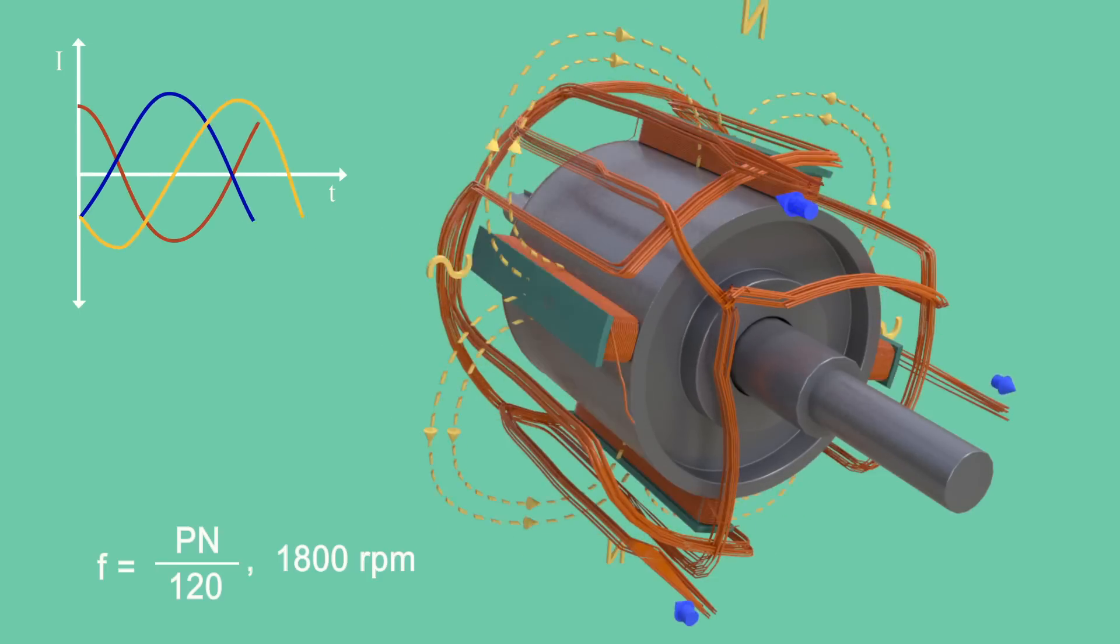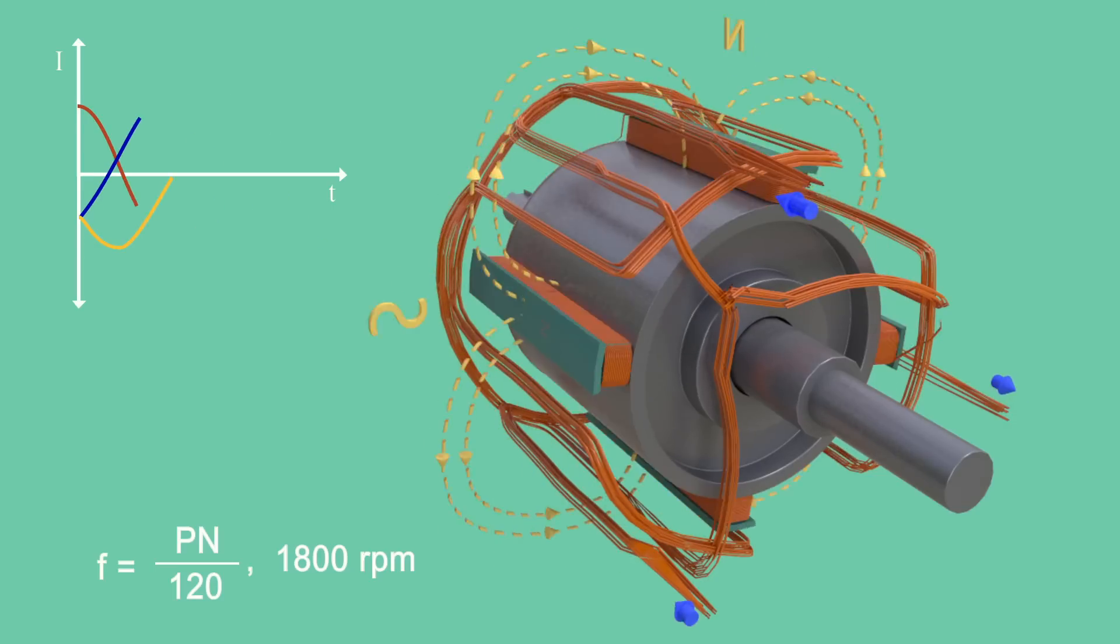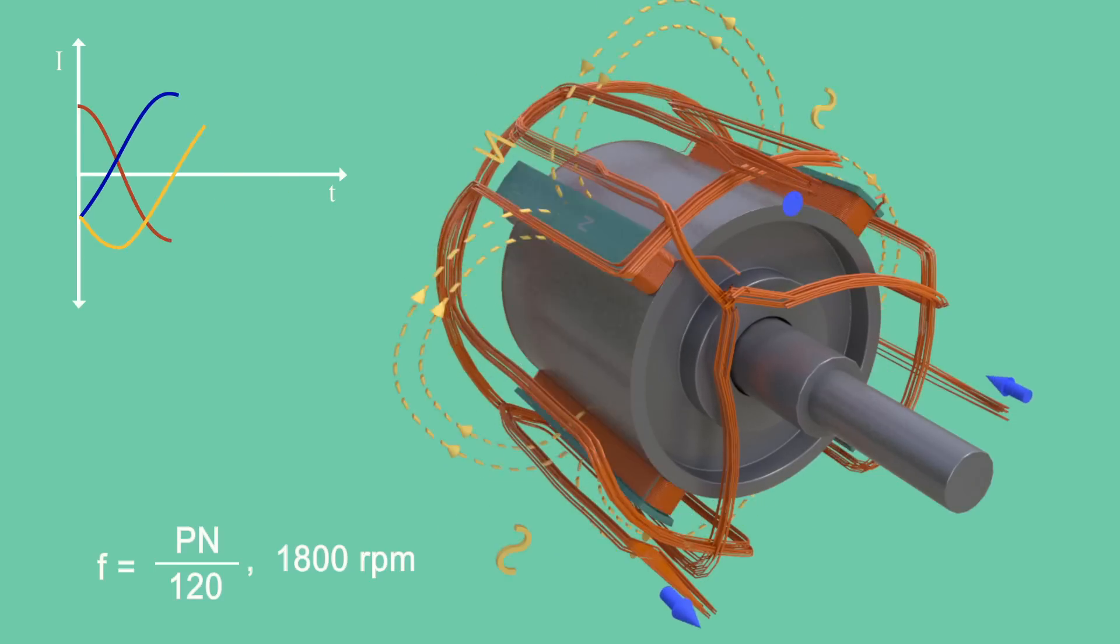Salient pole rotors are used when the prime mover rotates at relatively lower speed from 120 to 400 RPM.